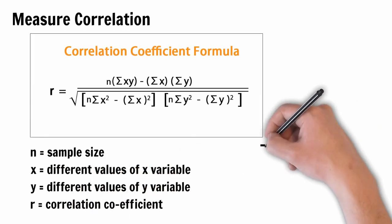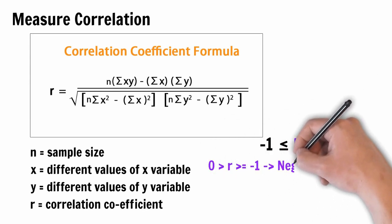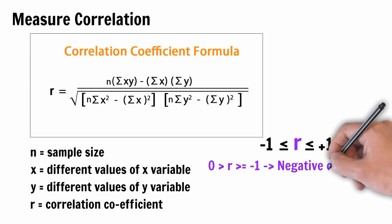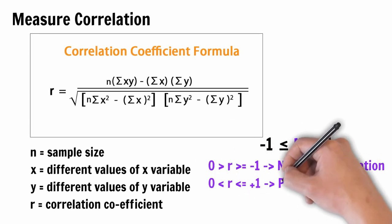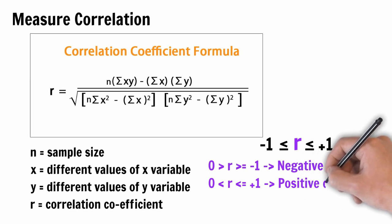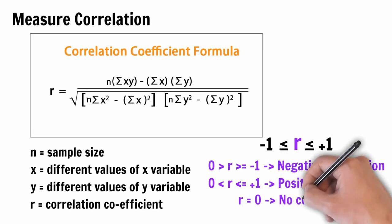The value of r always varies between negative 1 to positive 1. Values that are between 0 to greater than or equal to negative 1 indicate negative correlation. Values that are between 0 to less than or equal to positive 1 indicate positive correlation. A value of r equal to 0 indicates no correlation.